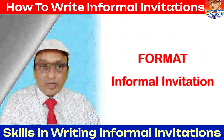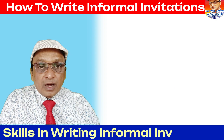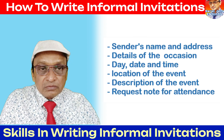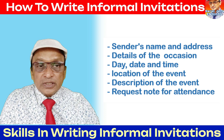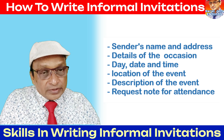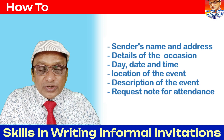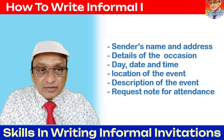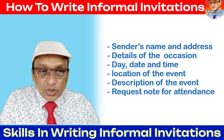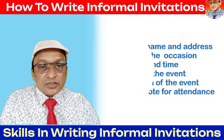Let's look at the format of an informal invitation. The different parts of the informal invitation are: the sender's name and address; next, details of the occasion — what is the event; then the date and time of the event; location of the event; after that, a brief description of what is going to take place; and finally, a request note — you have to request the person for their attendance.